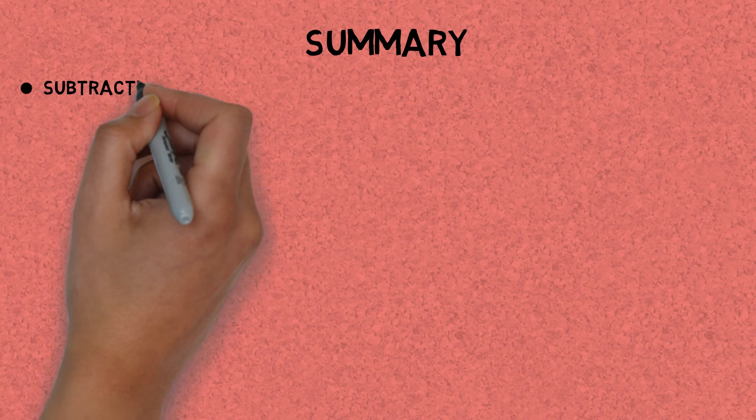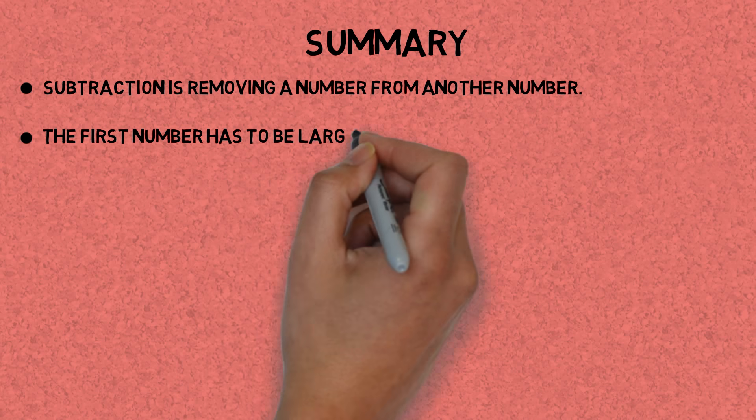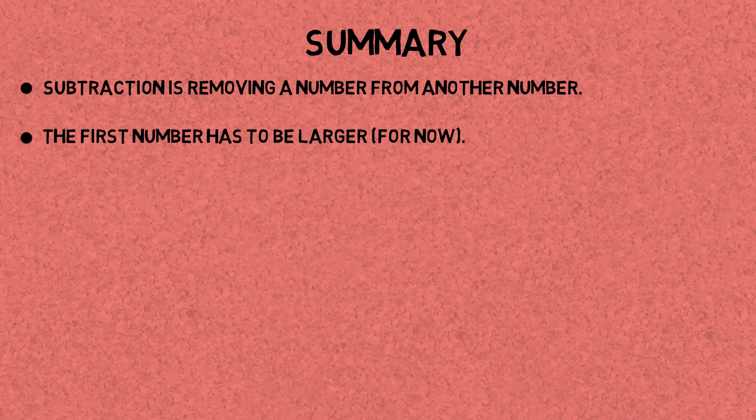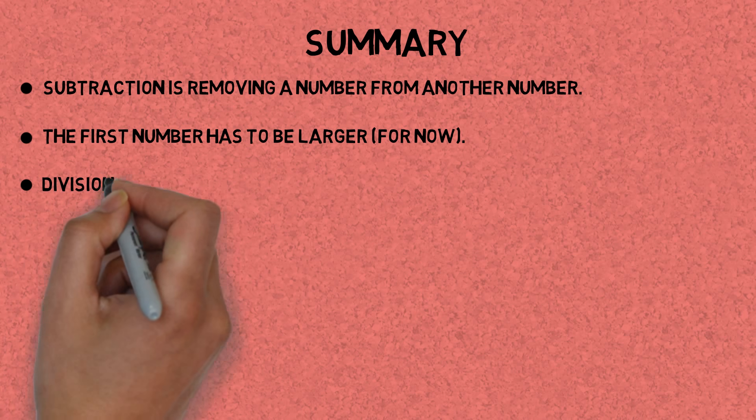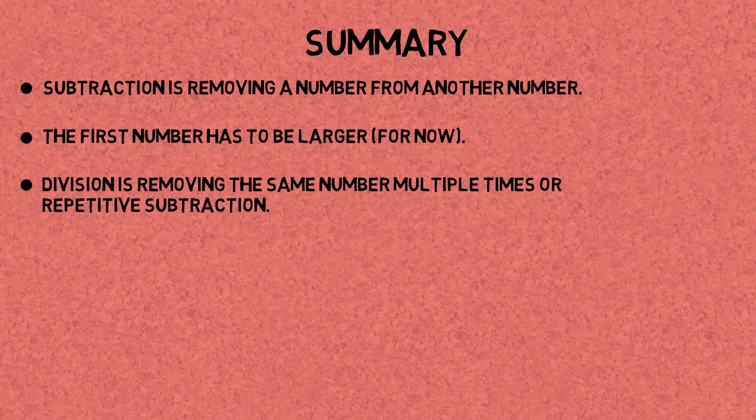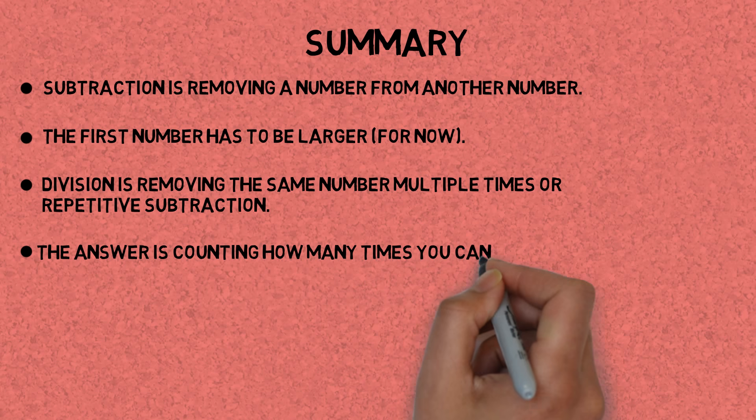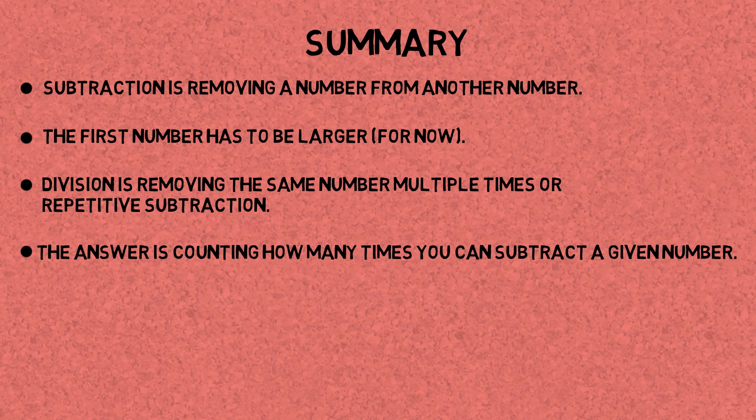So let's summarize. Subtraction is removing a number from another number, and the first number has to be larger. Division is removing the same number multiple times, or repetitive subtraction, or glorified subtraction. And the answer is just a counter of how many times you can subtract that number.